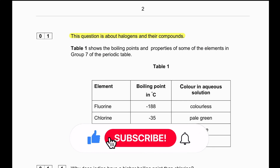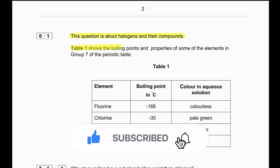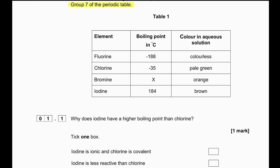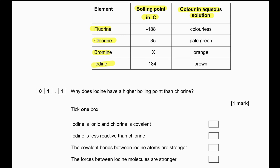Question 1 is about halogens and their compounds. Table 1 shows the boiling points and properties of some of the elements in group 7 of the periodic table. We can see the table with the boiling point and color in aqueous solution of fluorine, chlorine, bromine, and iodine. As we go down the group, the color darkens and the boiling point increases.